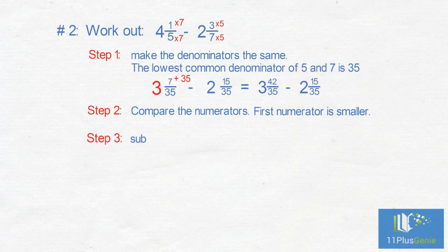Step 3: Subtract the whole numbers. 3 take away 2 equals 1. Subtract the fractions. 42 take away 15 equals 27.